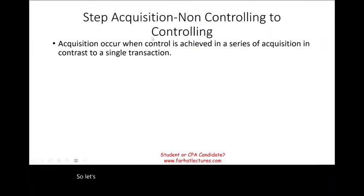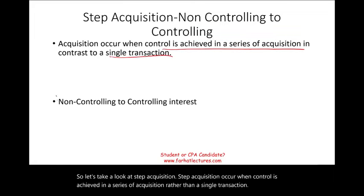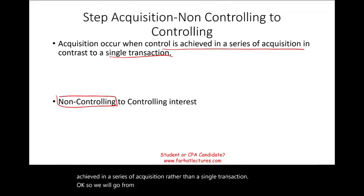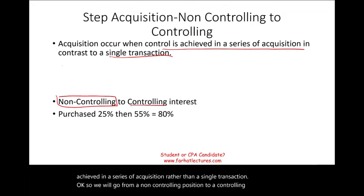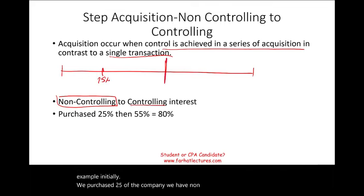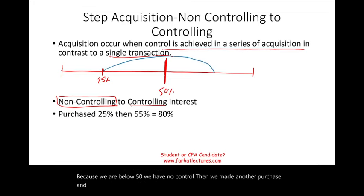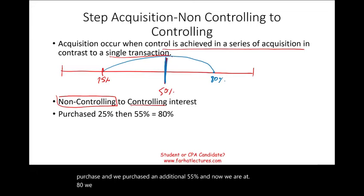Step acquisition occurs when control is achieved in a series of acquisitions rather than a single transaction. We will go from a non-controlling position to a controlling interest. For example, initially we purchased 25% of the company — we have no control because we are below 50%. Then we made another purchase of an additional 55%, and now we are at 80%, crossing the 50% controlling interest threshold. What do we have to do under those circumstances?